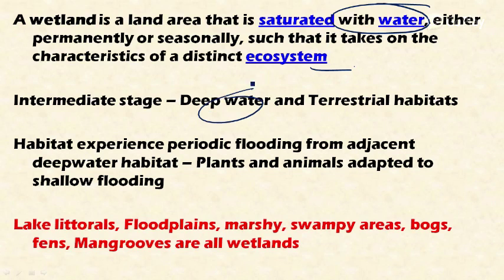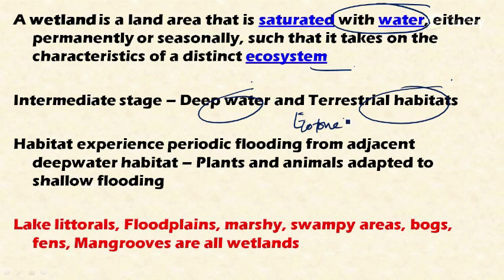This wetland is an intermediate stage between the deep water ecosystem — that is, rivers and oceans — and the terrestrial habitat, so it is a type of ecotone. This wetland has a distinct habitat and experiences periodic flooding from the adjacent deep water habitat, that is rivers or oceans.